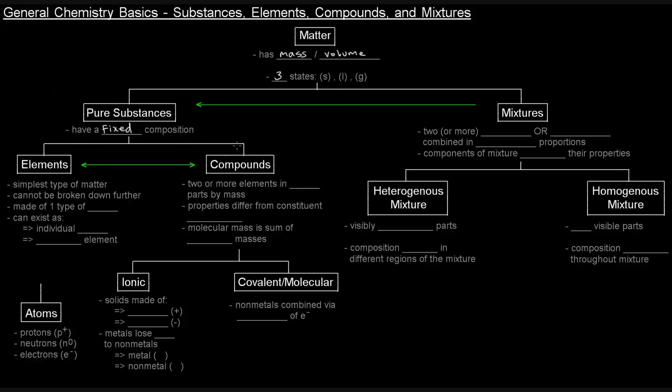Within pure substances we have elements and we have compounds. We've mentioned elements in the previous video. Elements are basically the simplest type of matter and cannot be broken down further. Specifically, elements are made of one type of atom. We'll have videos specifically on the structure of an atom and things like that. Elements can exist as an individual atom or as a diatomic element. Some atoms, some elements, their elemental form is just one atom of that element. Like magnesium, the elemental form of magnesium is just solid magnesium. Or something like carbon, carbon is just solid carbon.